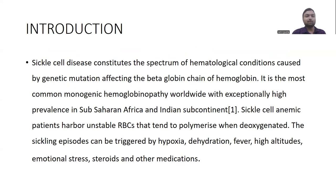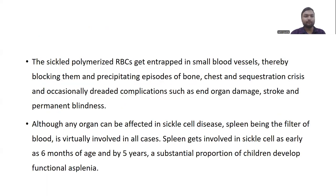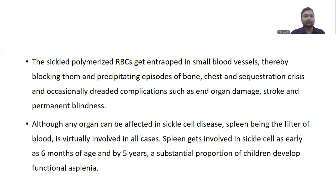Sickle cell anemic patients have unstable erythrocytes that tend to polymerize when deoxygenated. Sickling episodes can be triggered by hypoxia, dehydration, fever, high altitudes, emotional stress, steroids, and other medications. The sickle polymerized erythrocytes then get entrapped in small blood vessels, blocking them and precipitating episodes of bone, chest, and sequestration crisis, and occasionally causing complications such as end-organ damage, stroke, and even permanent blindness.